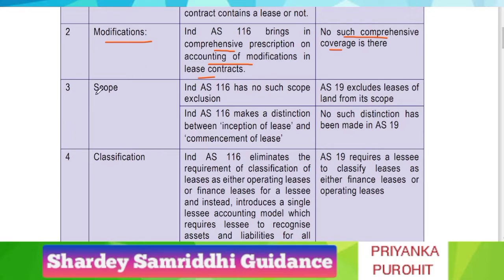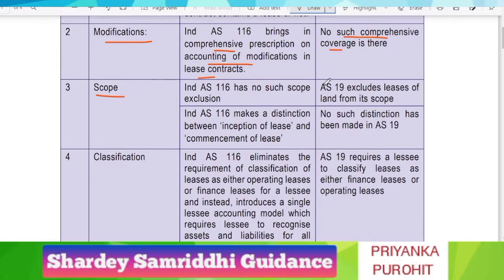The next point of difference is scope. AS 19 excludes lease of land from its scope, but if we see IndAS 116, it has no such exclusion. This means that even land lease is included in IndAS 116.